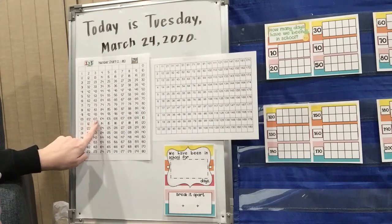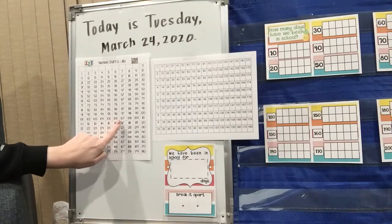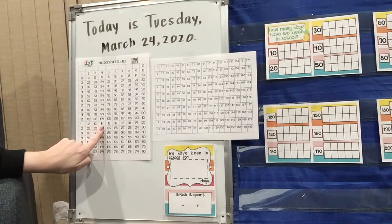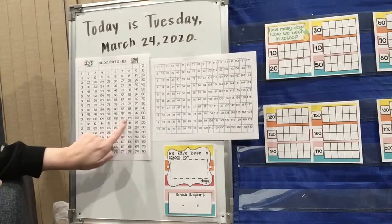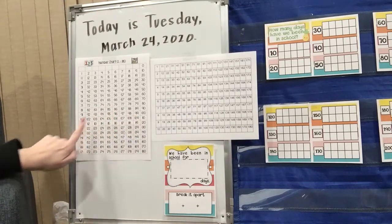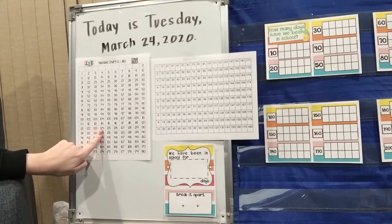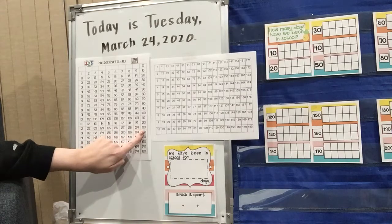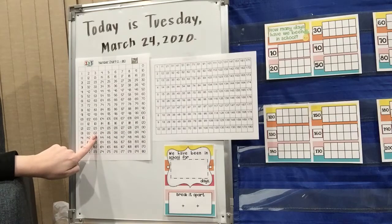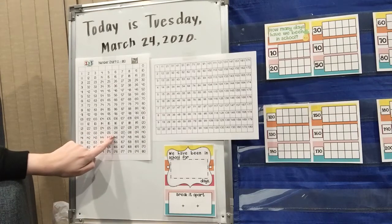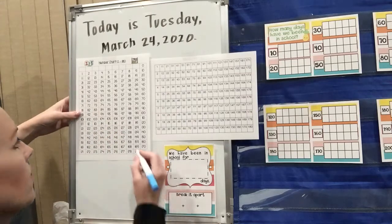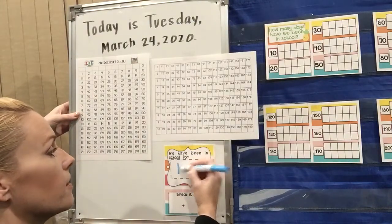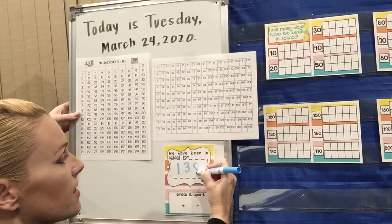101, 102, 103, 104, 105, 106, 107, 108, 109, 110, 111, 112, 113, 114, 115, 116, 117, 118, 119, 120, 121, 122, 123, 124, 125, 126, 127, 128, 129, 130, 131, 132, 133, 134, 135, 136, 137, 138. So today we've been in school for 138 days.